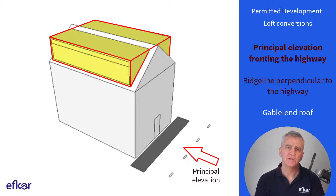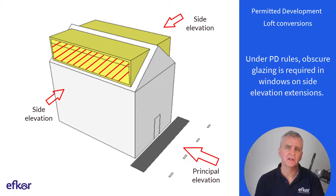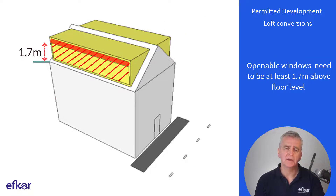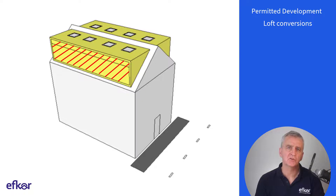However, for the dormer windows on side elevations to be feasible under PD rules, they need to comply with a condition that requires obscure glazing in extensions on side elevations. Openable windows need to be at least 1.7 meters above floor level. If clear glazing is required, roof lights can be installed under Class C of the PD rules.